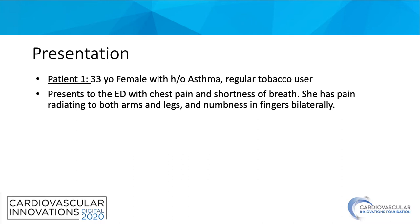Patient 1 is a 33-year-old female who has a history of asthma and is a regular tobacco user. She presents to the ED with chest pain and shortness of breath, and states that the pain radiates to her arms and legs and also has numbness in her fingers bilaterally.